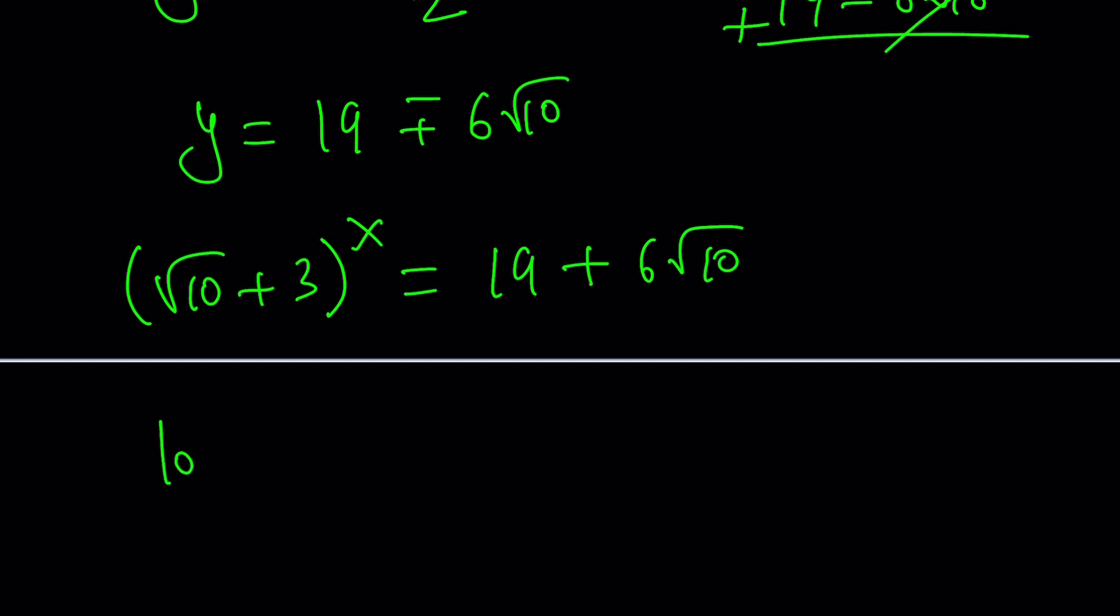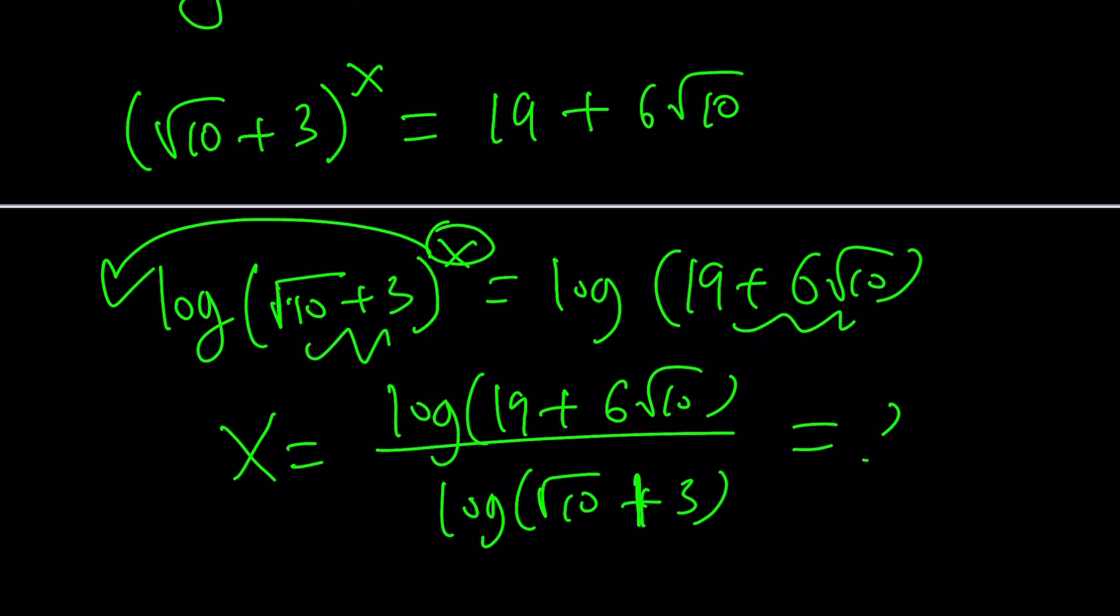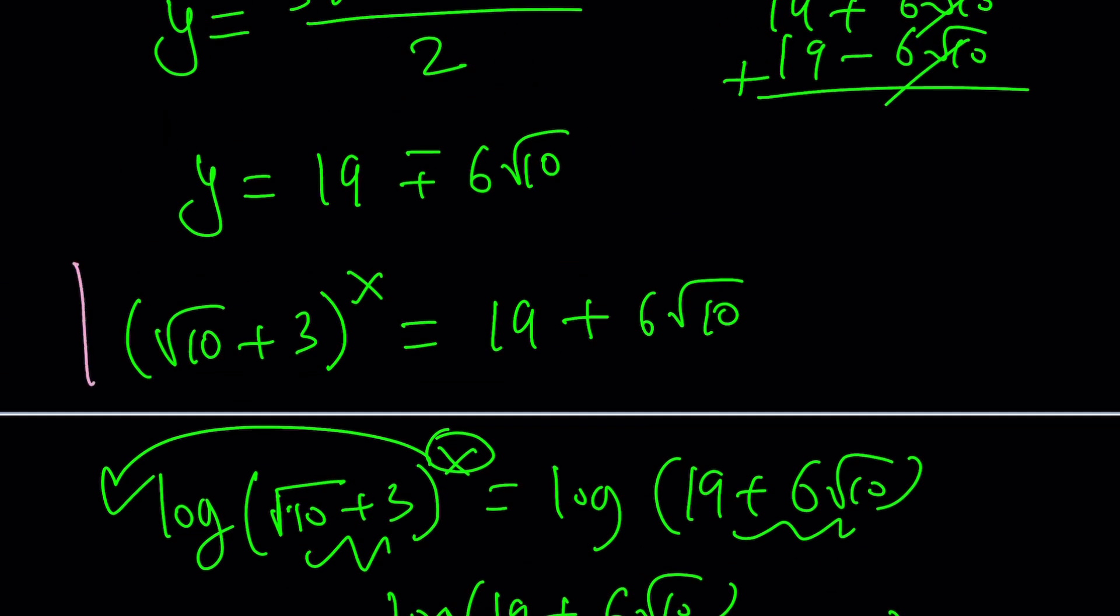So my goal is to, can I find x from here? Absolutely. I mean, you can log both sides, and when you log both sides, you're going to get something like this. And then eventually, using properties of logarithms, you can move the x to the front and divide both sides by that. So to keep a long story short, x is going to be the following. But the million dollar question is, what is this equal to? How do you simplify it, right? So in order to be able to do that, we need to be able to write this as a power of that. And that's what the whole thing is all about. Look, root 10 plus 3 to the power of what number equals 19 plus 6 root 10.